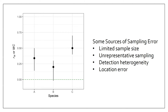These sources of uncertainty include things like limited sample size and detection heterogeneity. Some of these sources of sampling error have generally been ignored for RM, but they're important. By incorporating this uncertainty, you're not merely calculating migratory connectivity strength — you're estimating it, and you're being honest about how well you really know it.